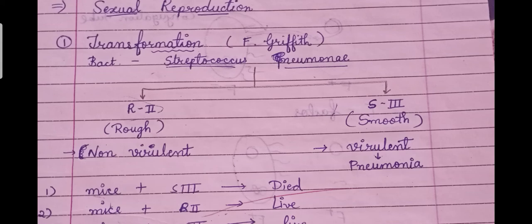The rough bacteria was non-virulent — it did not cause disease. The smooth bacteria, on the other hand, was virulent and was responsible for causing pneumonia. It was this S strain bacteria that caused disease in mice.